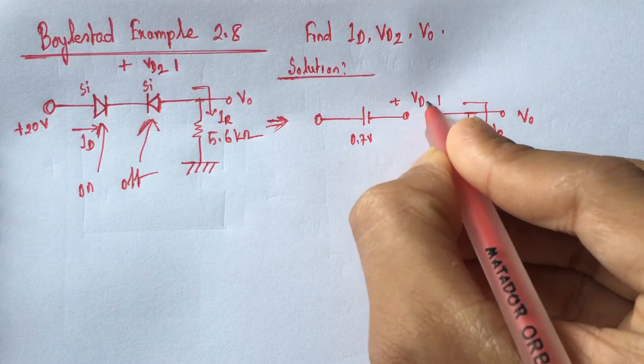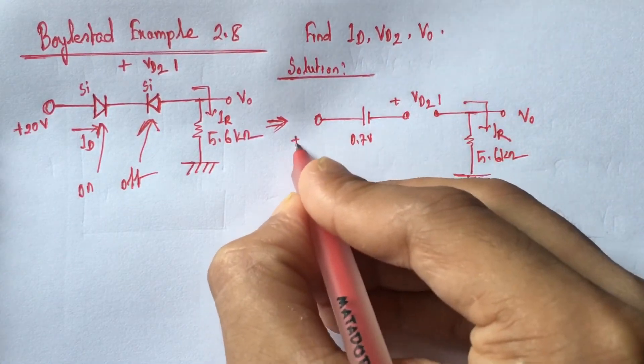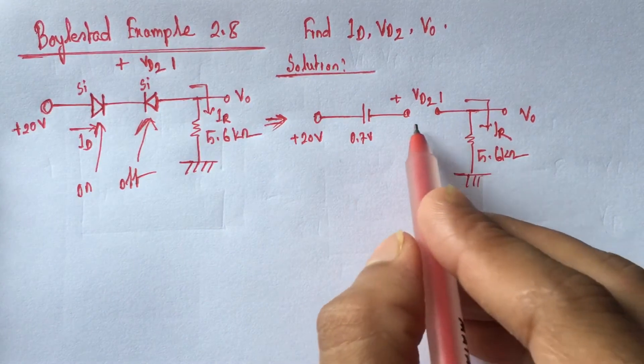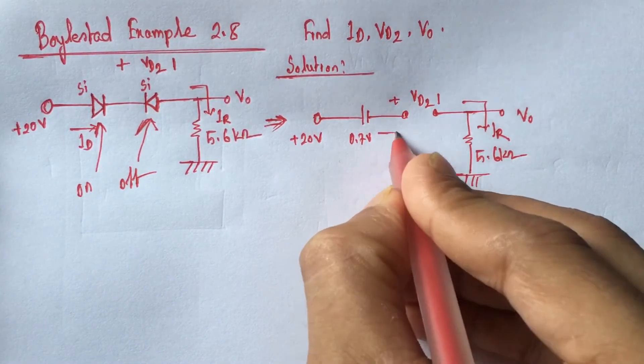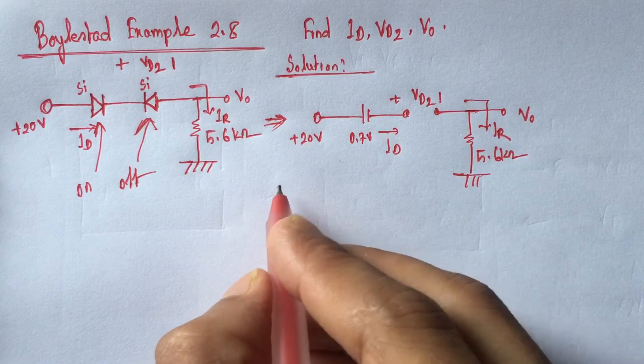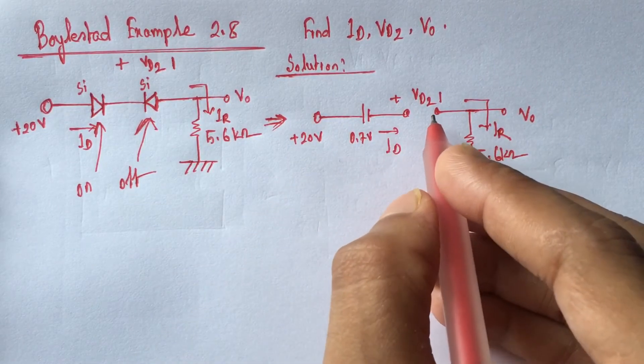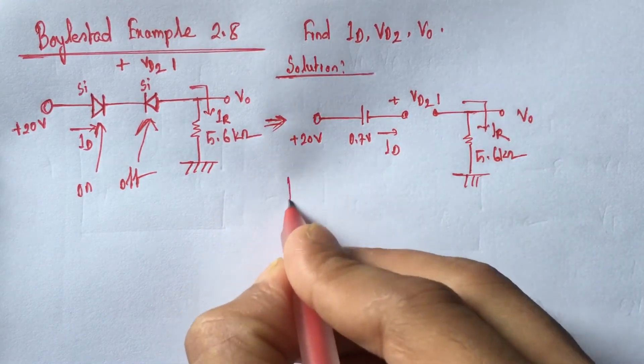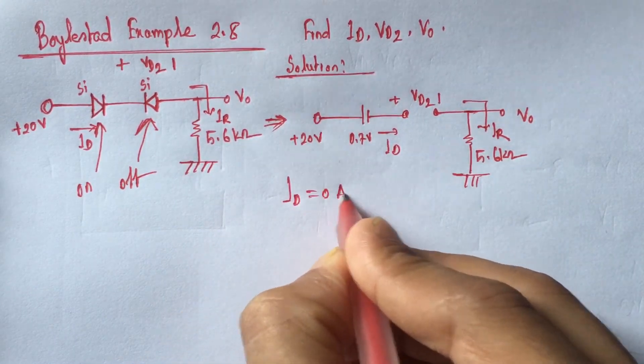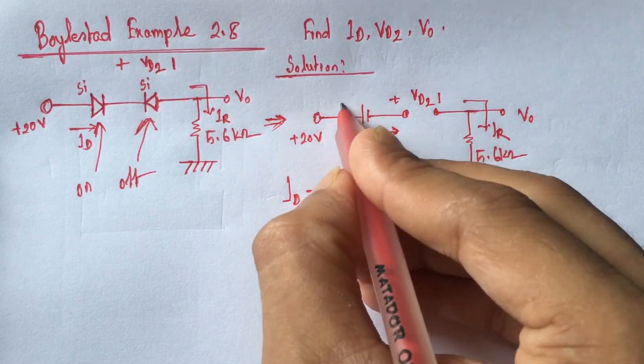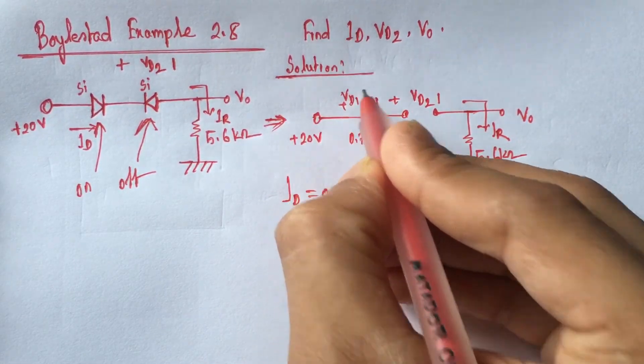Here we go. From this circuit we see that the current ID will be zero since the second silicon diode is off, so ID is equal 0 ampere. Since ID is 0 ampere, logically the voltage VD1 will